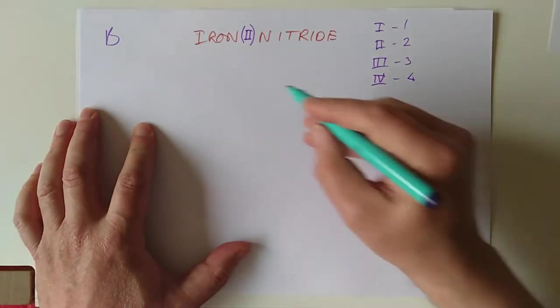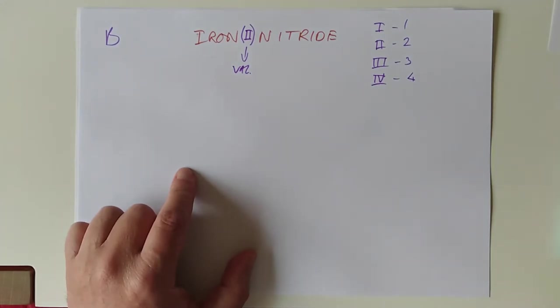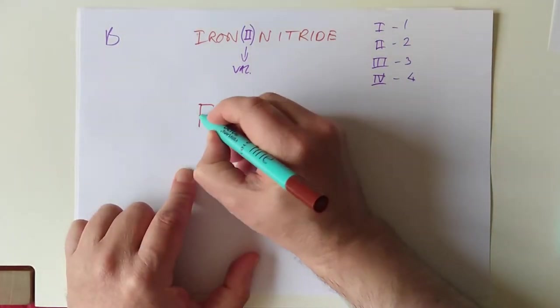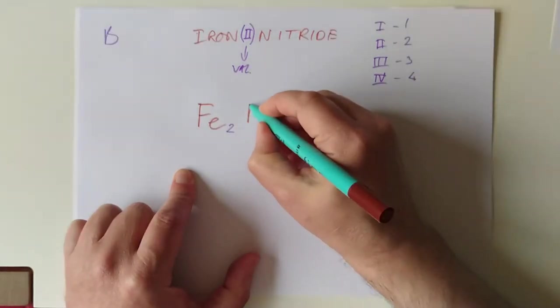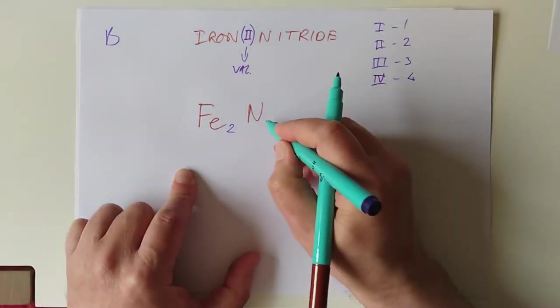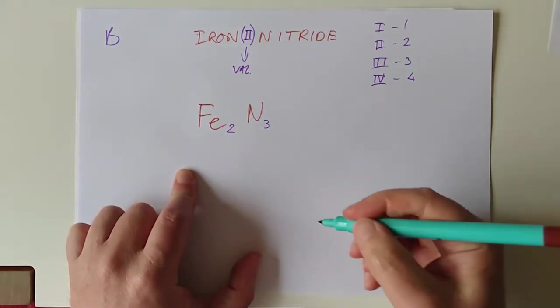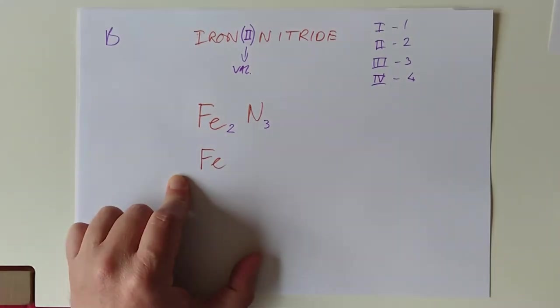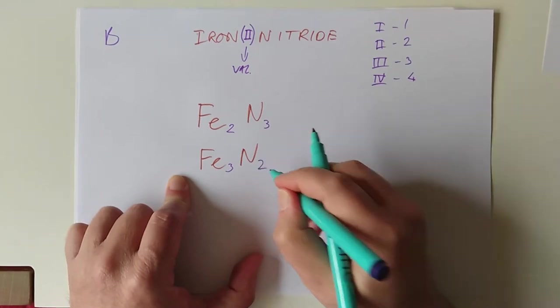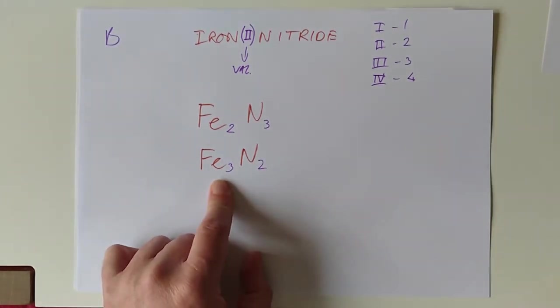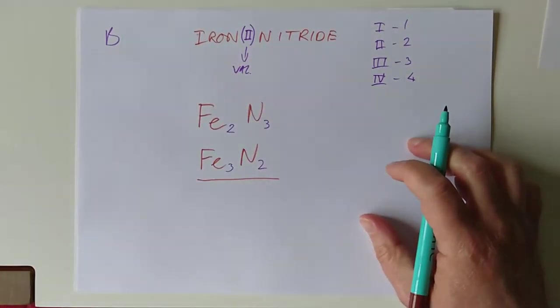So iron 2 nitride. This is the valency number for the iron. Now life is a lot easier. Because it's the symbol for iron, which is Fe, the valency number is 2. The symbol for nitrogen is still N and the valency number for nitrogen is 3. So we follow the rules before. These are the valency numbers. That's step 1. Swap them around. Fe3N2. And then we ask ourselves, can we simplify these two? No, we can't. So that is our answer for the formula of iron 2 nitride.